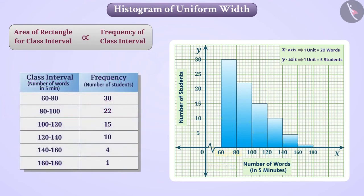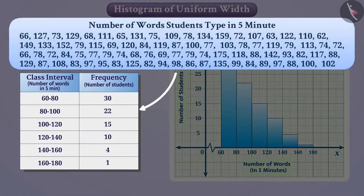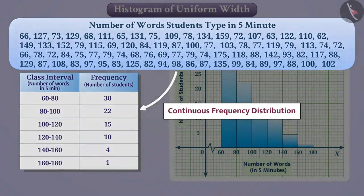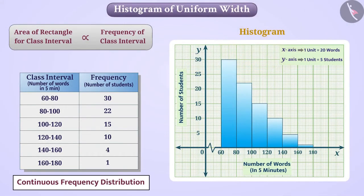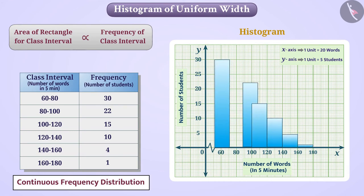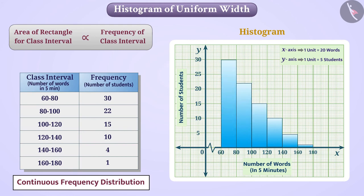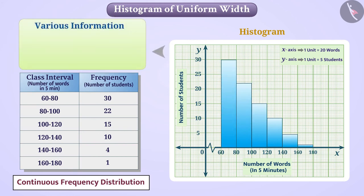In this way, we will get a histogram. Here, the data is classified as continuous frequency distribution. Since the histogram is used to represent a continuous frequency distribution, it does not contain distances or spaces between rectangles. As you can see in this histogram, there is no spaces between the rectangles. Various information can be obtained by looking at this histogram.